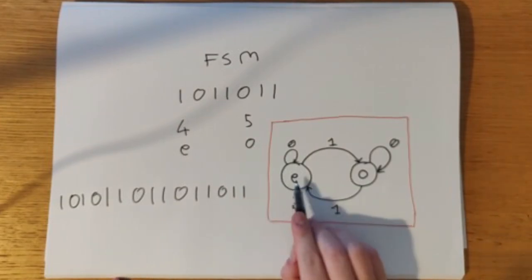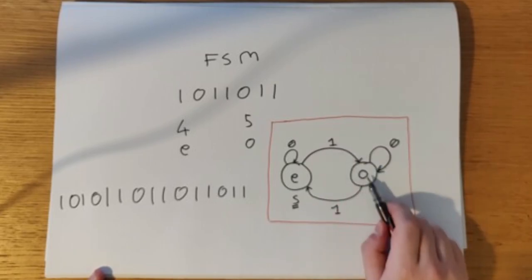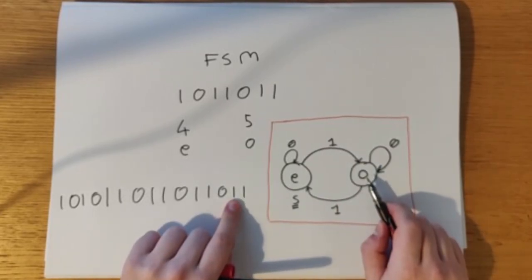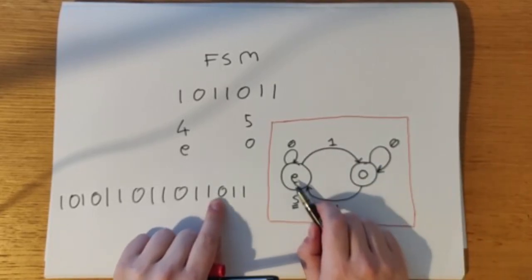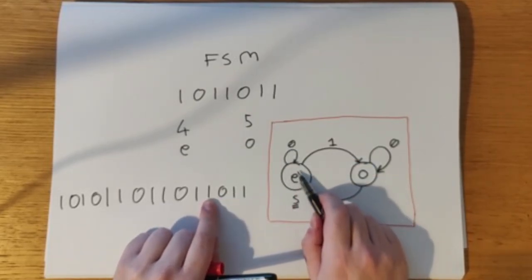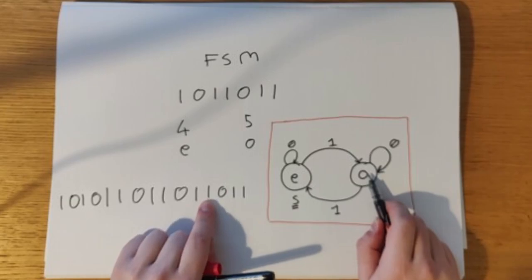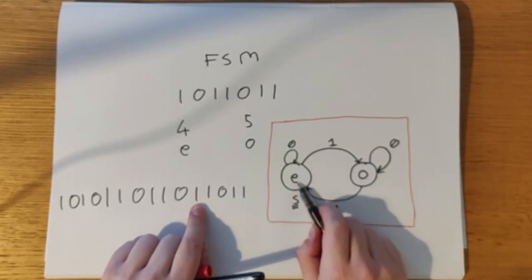We're in the even state. We see a 1, we move to the odd state. We see another 1, we move back to the even state. 0, we stay in the same state. We see another 1, so we follow the path out back to the odd. We see another 1, we're back in the even state. We see a 0, we remain in the same state.